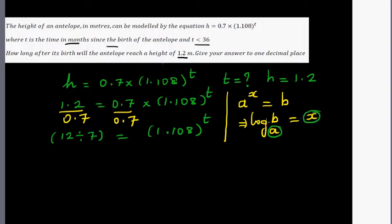So the bases are the same. So to write this, let me rewrite this in the exponential form. If I write this in the exponential form, I can say 1.108 raised to t is equal to 12 divided by 7.